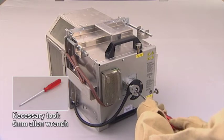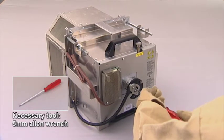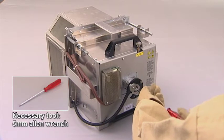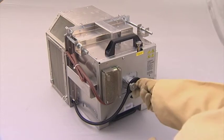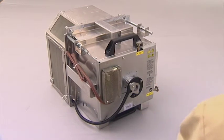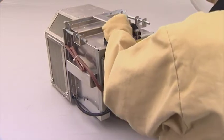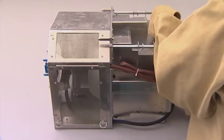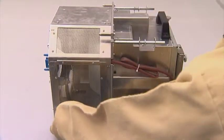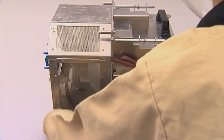Release the lamp from its socket by removing the hexagon socket head cap screw and washer. Remove the lamp house side cover by releasing the two retaining thumb screws.